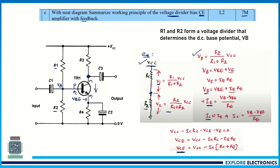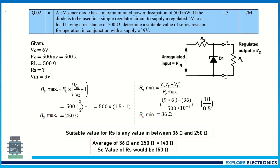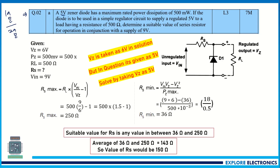You can answer questions 1a, 1b, 1c completely, or you can go with 2a, 2b, 2c as the choice question. Question 2a is a problem on a voltage regulator circuit: a 5-volt Zener diode has a maximum rated power dissipation of 500 milliwatts. The diode is used in a simple regulator circuit to supply a regulated 5 volts to a load of 500 ohms. The supply voltage Vin is 9 volts. Determine the suitable value of series resistor Rs.